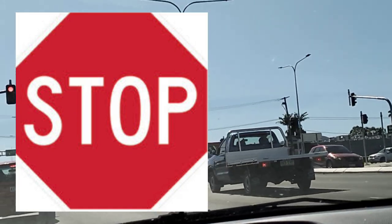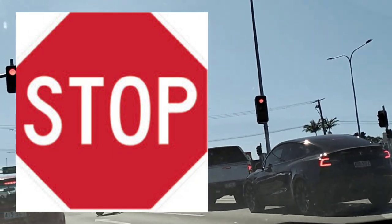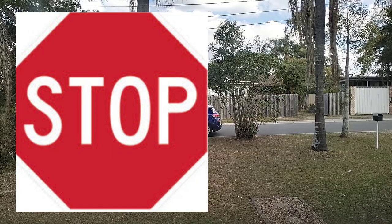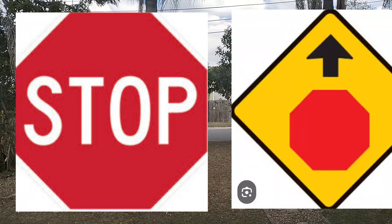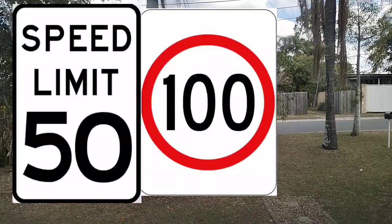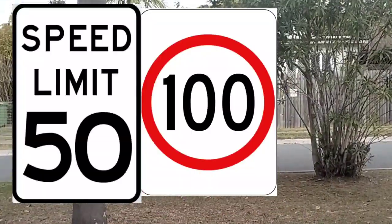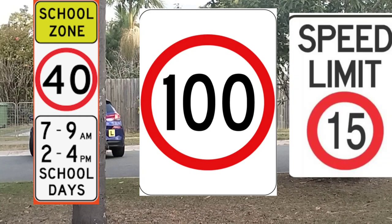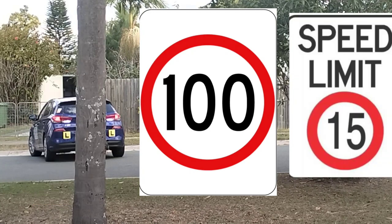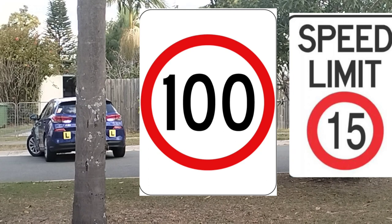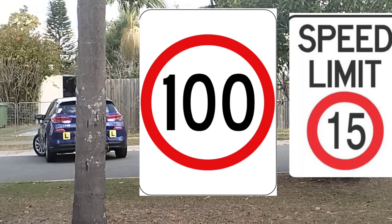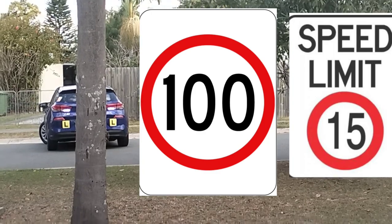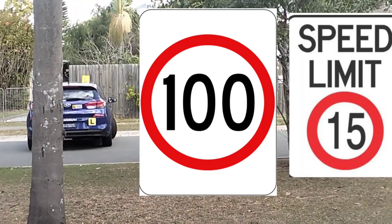At a stop sign, you must come to a complete stop and obey the give way rules. At a give way sign, you must slow down or stop if required and obey the give way rules. Speed signs reflect the maximum speed allowed — you must travel at or below the speed shown. Some drivers may be subject to lower speed limits, including heavy vehicles which are restricted to 100 kilometers per hour.